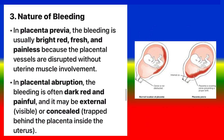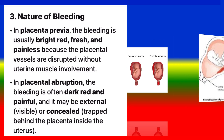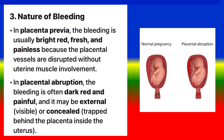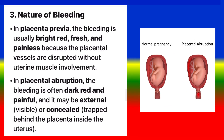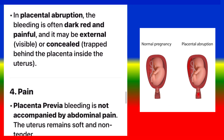Nature of bleeding. In placenta previa, the bleeding is usually bright red, fresh, and painless because the placental vessels are disrupted without uterine muscle involvement. In placental abruption, the bleeding is often dark red and painful, and it may be external, visible, or concealed.